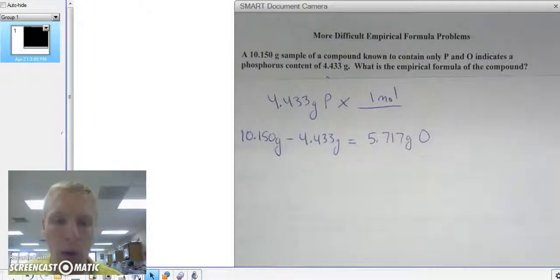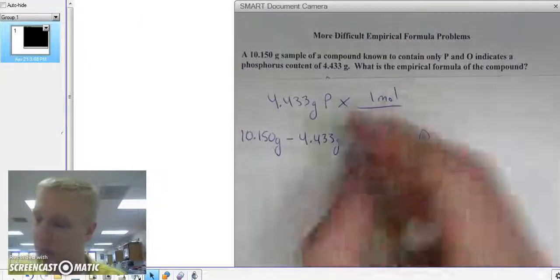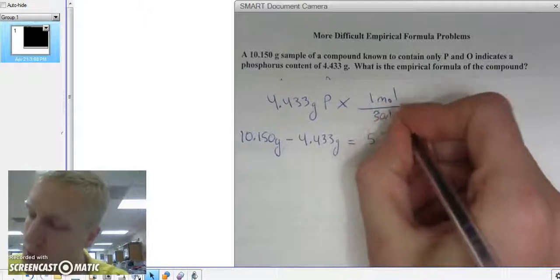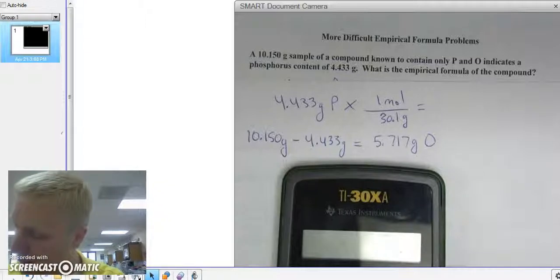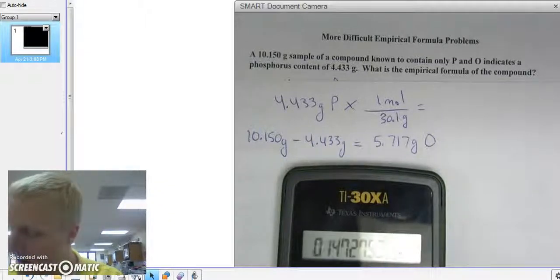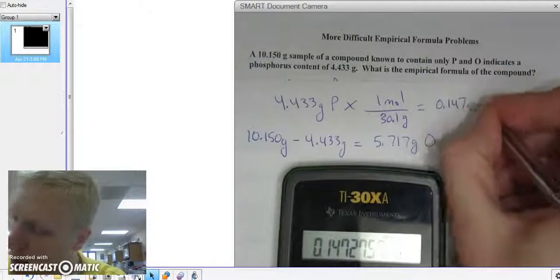For every 1 mole of phosphorus, I'm going to have 30.1 grams of phosphorus. I'm going to solve that out, typing in 4.433 times 1 divided by 30.1, and that's going to give me 0.147 moles of phosphorus.